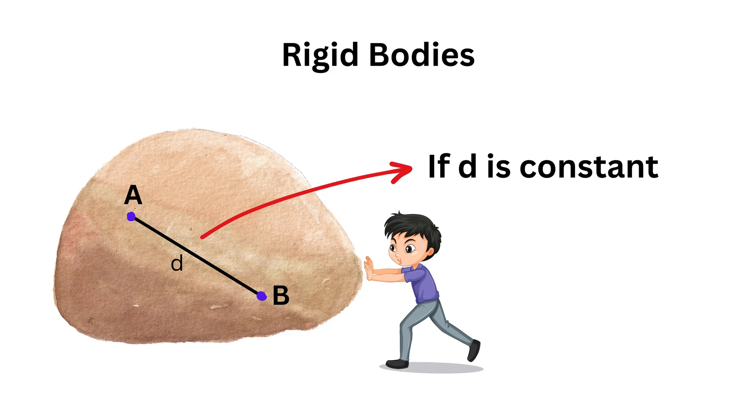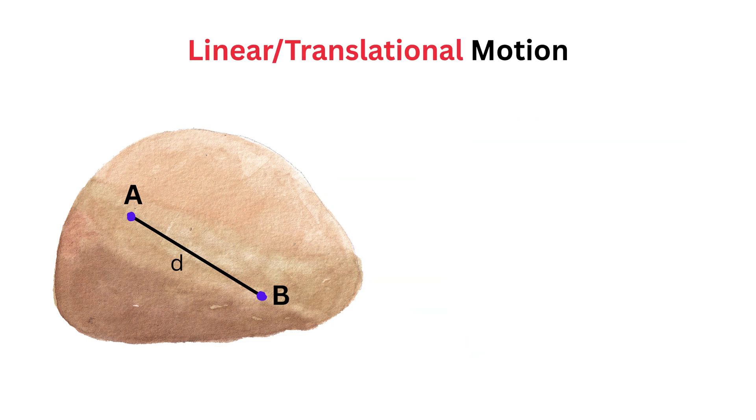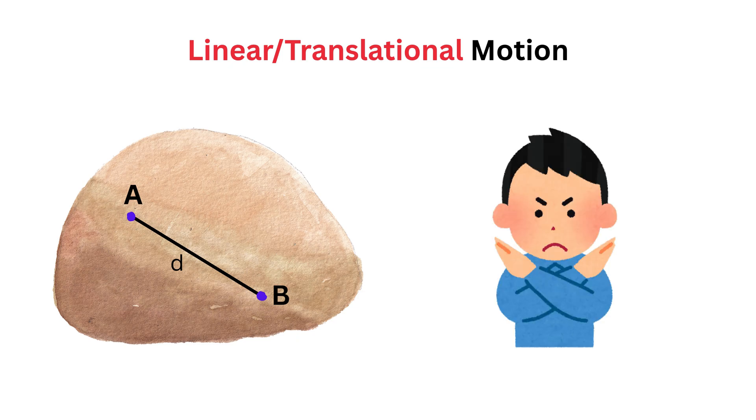This idea becomes clearer when we look at different types of motion. Let's start with linear, or translational motion. In linear motion, every point on the body moves in the same direction, and by the same amount. There's no rotation or twisting.